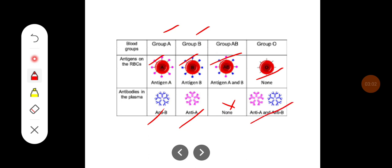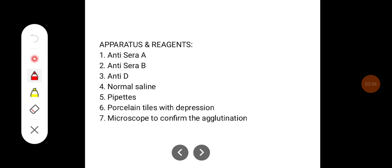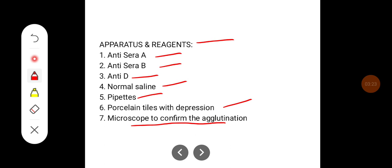For determination of the blood group, the apparatus and reagents required are: anti-sera A, anti-sera B, anti-sera D, normal saline, pipettes, porcelain tiles with a depression, and a microscope to confirm agglutination if there is any doubt.